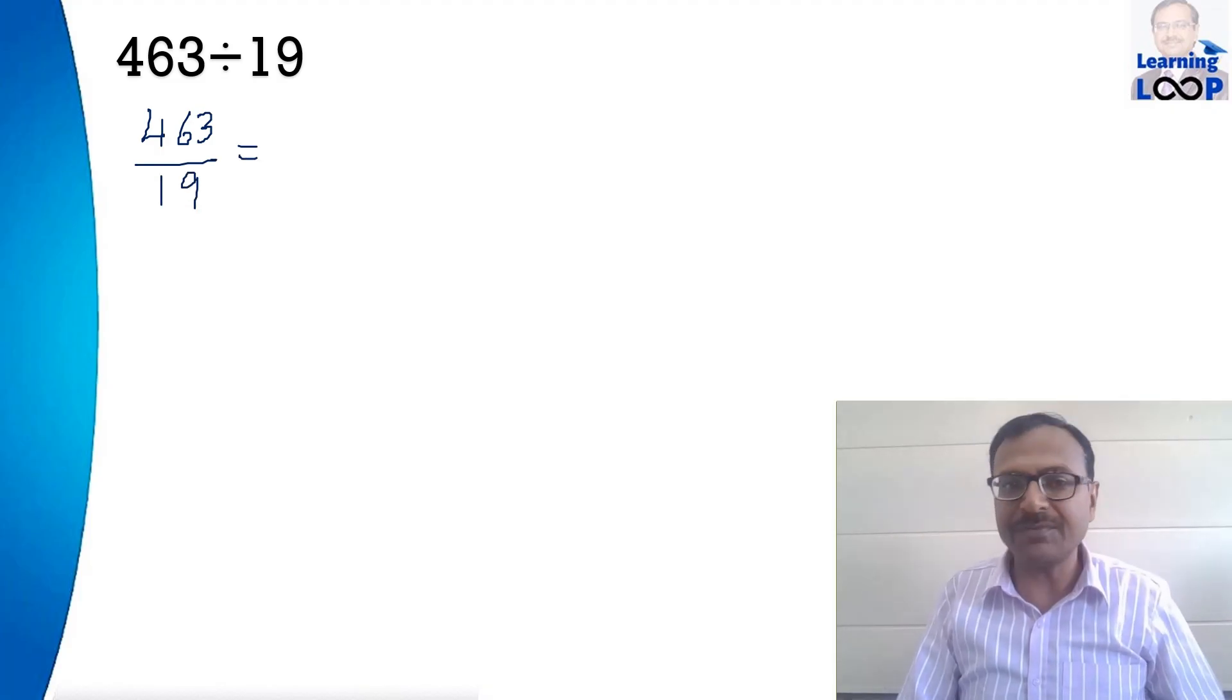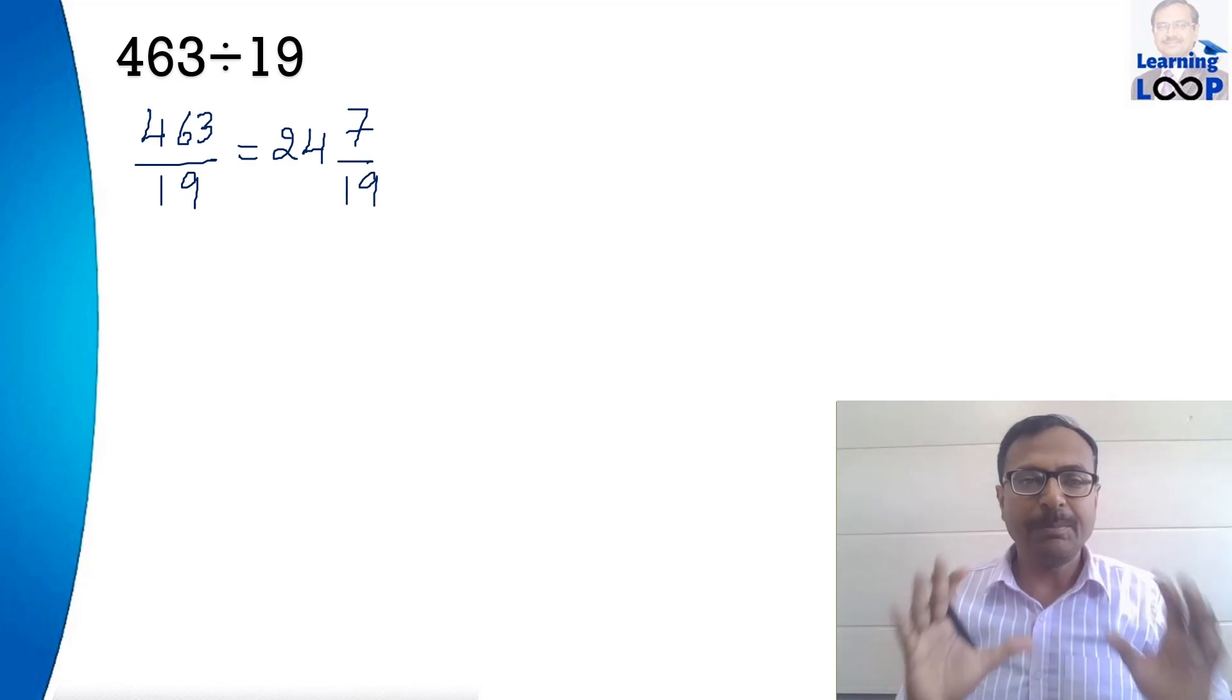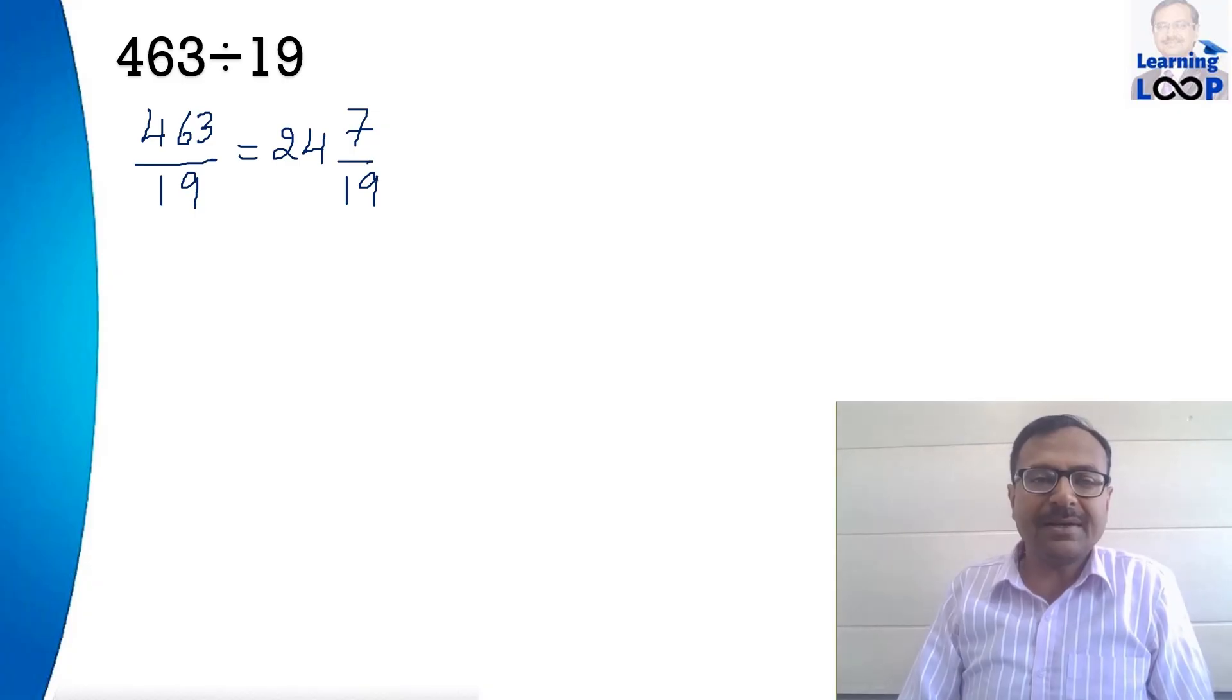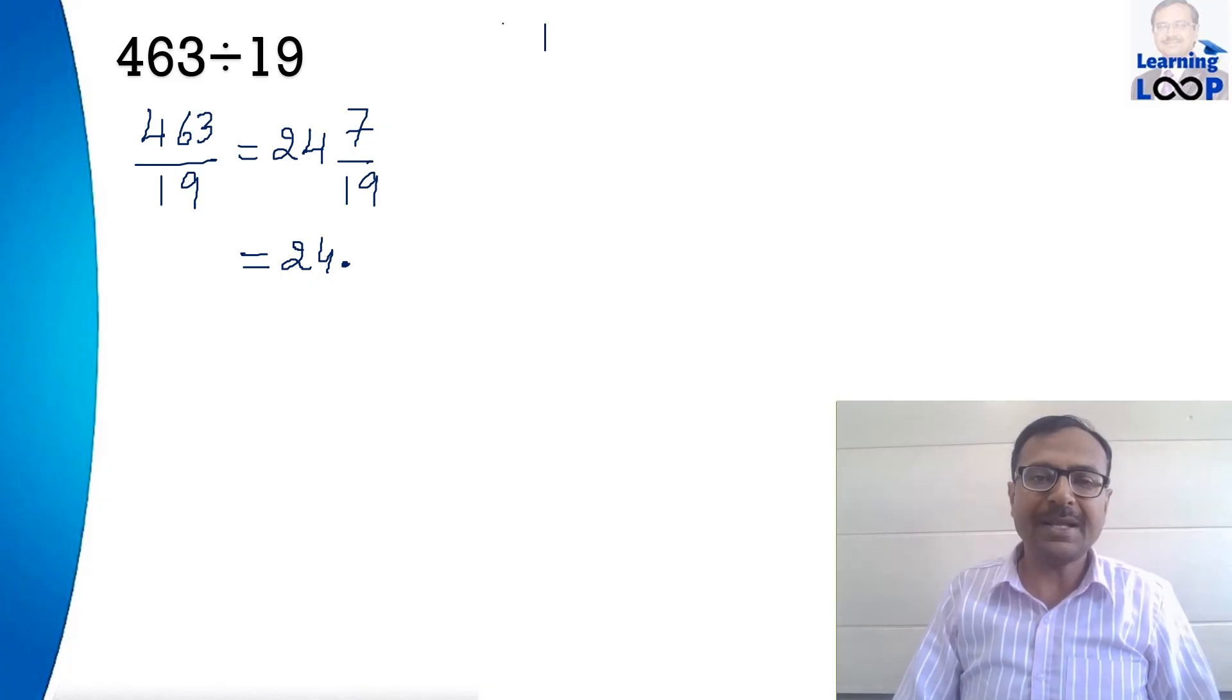Let us see another question in which now we are trying to divide a three digit number by 19. So again the same thing applies here 463 divided by 19. So we will write it as a fraction first and then reduce it to a mixed number which I have already done for you 24 7/19. Now this is the mixed number form of 463 upon 19. After that we just have to consider that the answer is 24 point something and that something can be found out using a rule. Let us do that rule now.